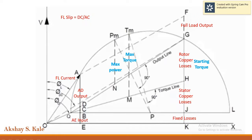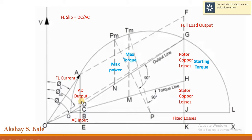The most important part: these are all the parameters you get from the circle diagram. The length of line NPM multiplied by the power scale gives the maximum power. The length of line PM multiplied by the power scale gives the rotor copper losses, the stator copper losses, and the fixed losses. AD is the full load output and AE is the input to the motor. You can also calculate the full load slip: DC divided by AC gives you the full load slip.